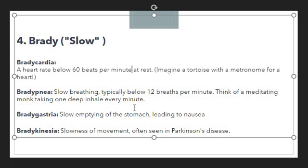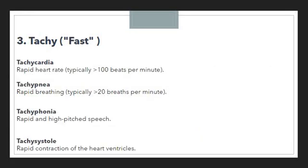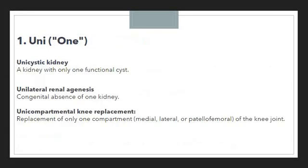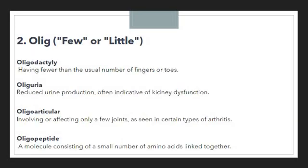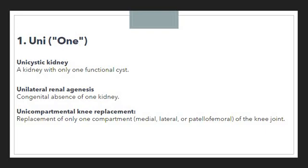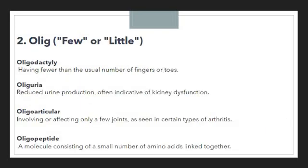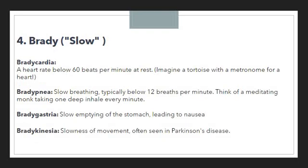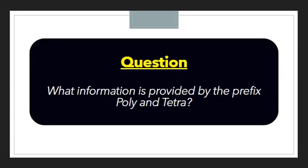So these are all the prefixes for today's session. The first is uni — showing the sense of one. Then olig — showing the sense of few or little. Tachy — showing fast. And brady — showing slowness.